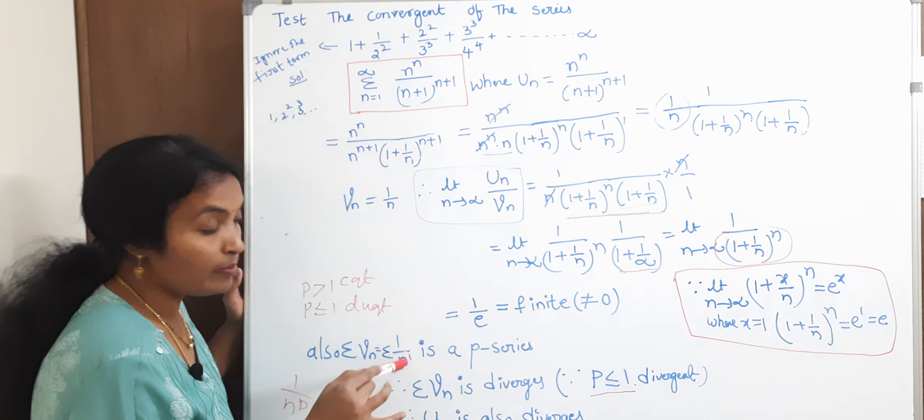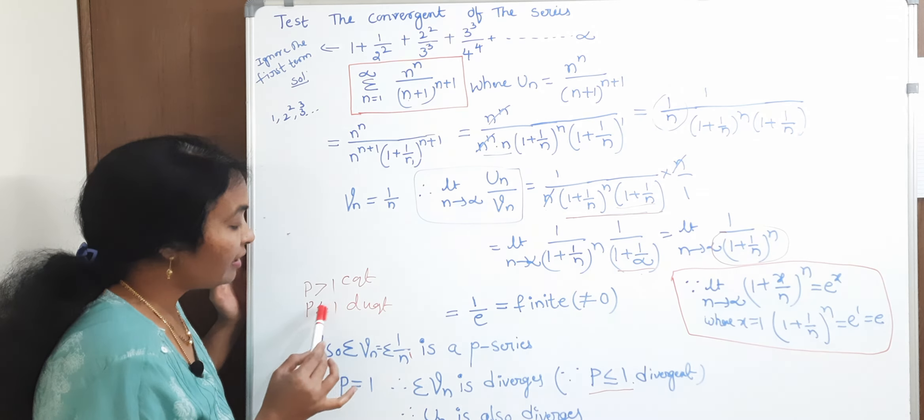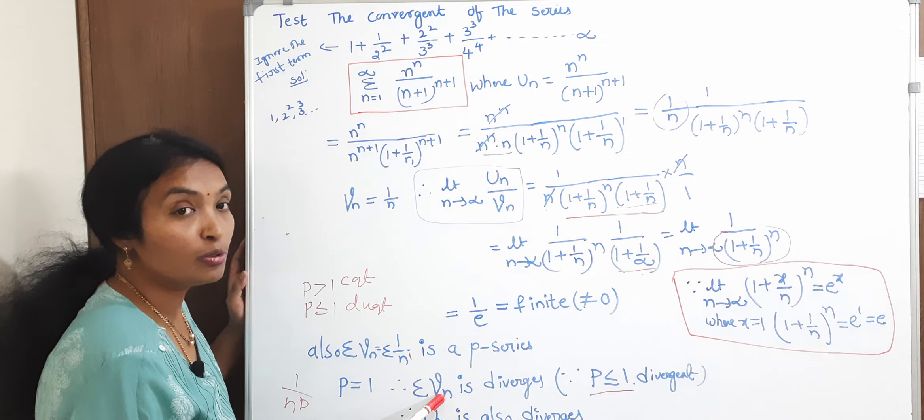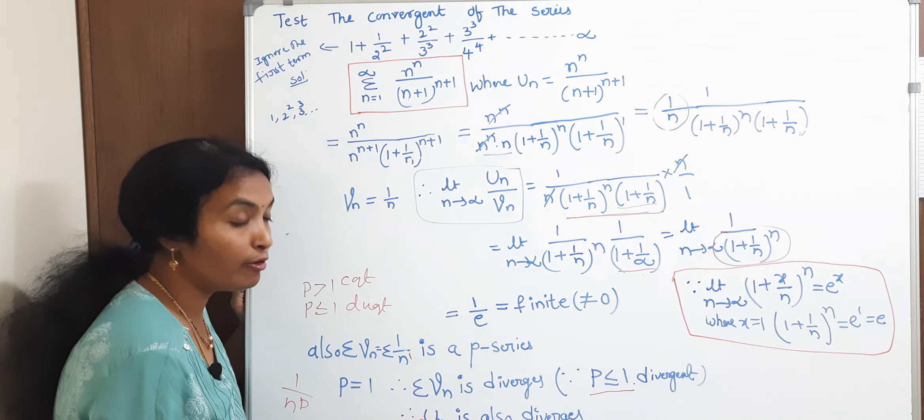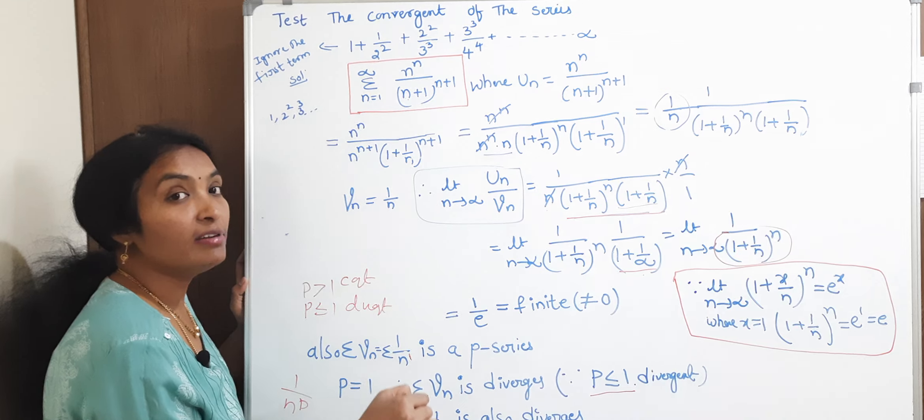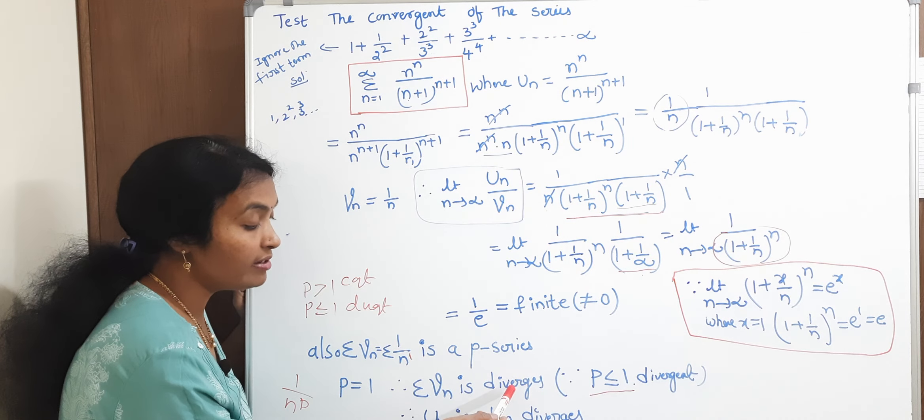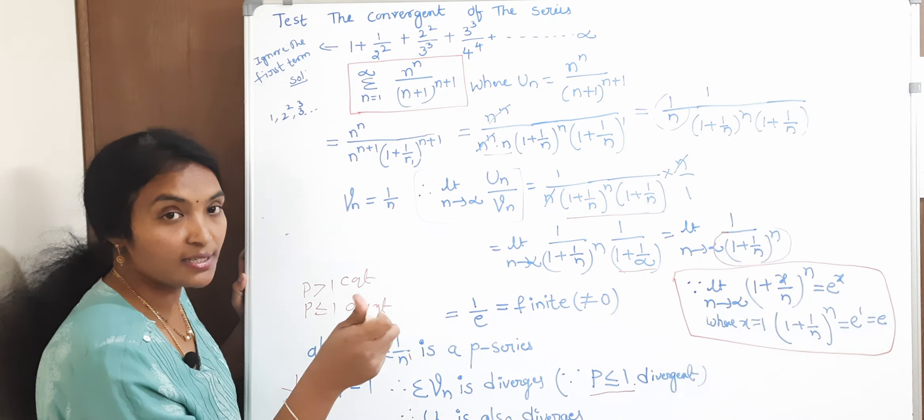1 by using P test 1 by N. 1 by N and 10 power nth a 1. P lessen ar equal to 1 ga avattikada V_n anadhi em hoothundi. Divergent haothundi. Therefore, we say that finally, the given series U_n is also diverges. Because U_n is diverges, when it is, if V_n diverges, U_n is also diverges. Is it clear?